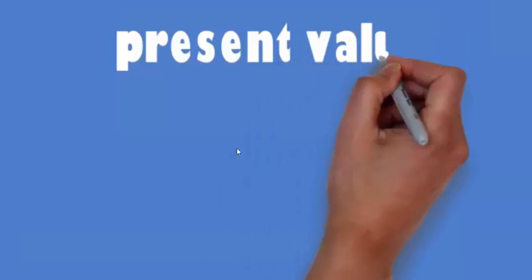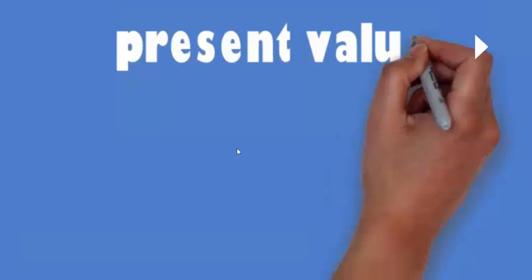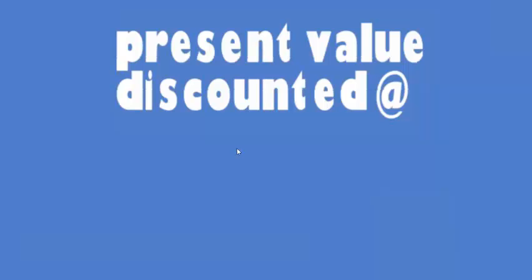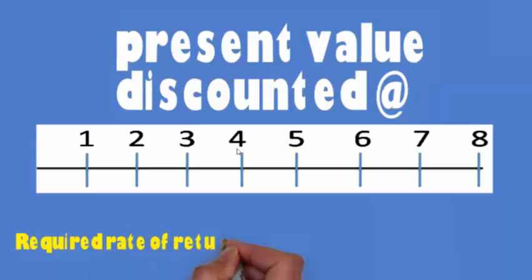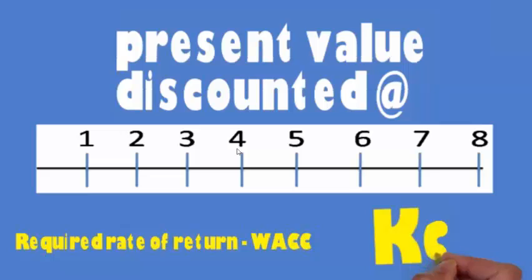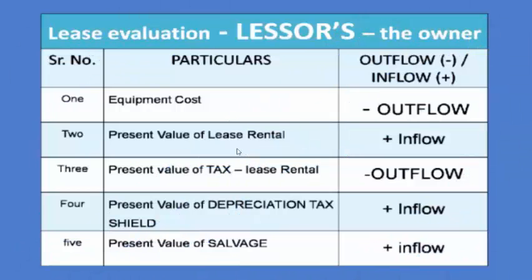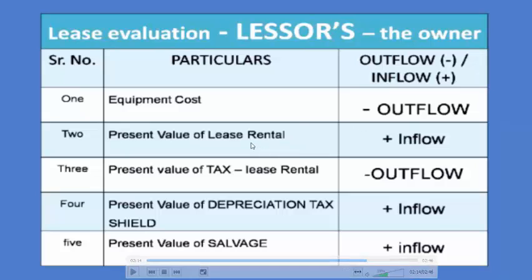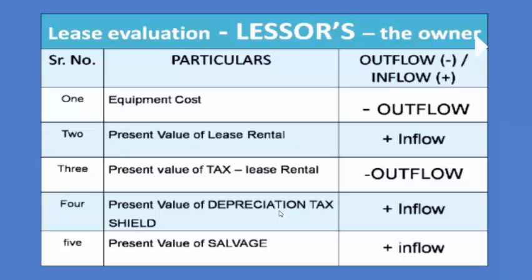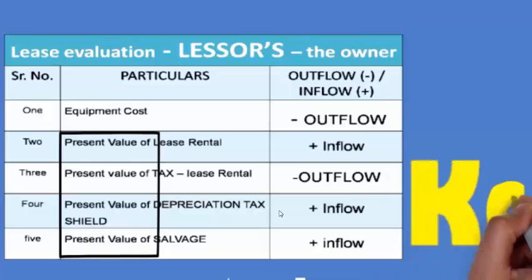These present values — of lease rental, depreciation tax shield, and salvage — will be discounted at the required rate of return, that is the weighted average cost of capital (WACC). You can see the video on WACC also. All these values will be discounted at Kc, the required rate of return. So we have five points: equipment cost is an outflow; present value of lease rental income is an inflow; present value of tax is an outflow; present value of depreciation tax shield is an inflow; and present value of salvage is an inflow. Two outflows and three inflows, all discounted at Kc.